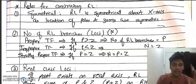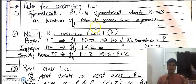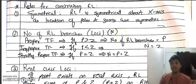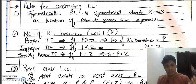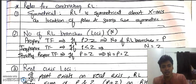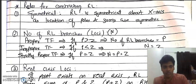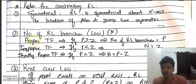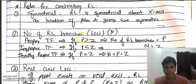From this point we will start constructing the root locus. For root locus construction, there are about 8 or 9 rules, and all are very important — you need to understand each and every rule to be able to plot the root locus. The first rule is that root locus is always symmetric about the x-axis.